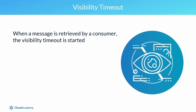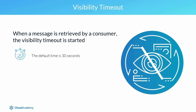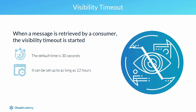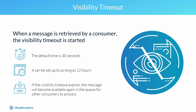I want to point out a little more about the visibility timeout. When a message is retrieved by a consumer, the visibility timeout is started. The default time is 30 seconds, but it can be set up to as long as 12 hours. If the consumer fails to process a message — perhaps due to a communication error — it will not send a delete message request back to SQS. If the visibility timeout expires without receiving the delete request, the message becomes available again in the queue for other consumers to process, appearing as a new message. The value of your visibility timeout should be longer than it takes for your consumers to process your messages.